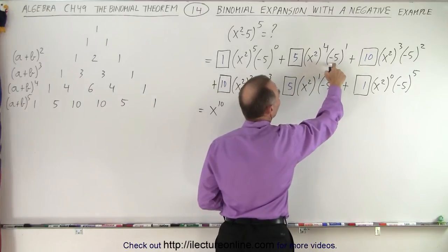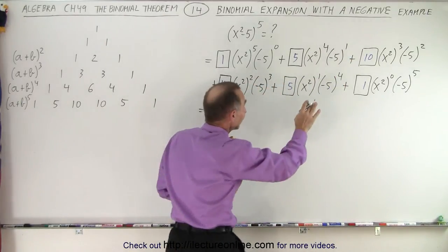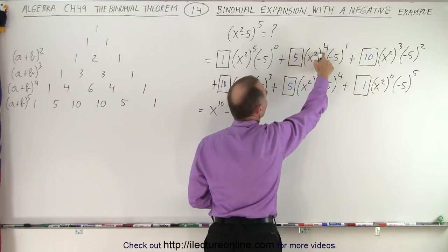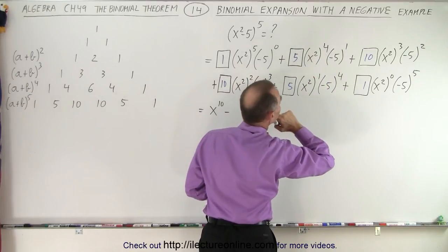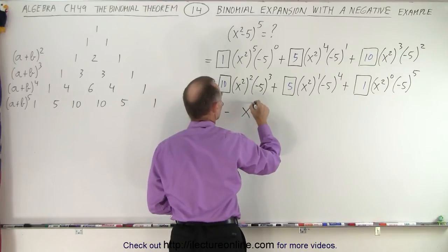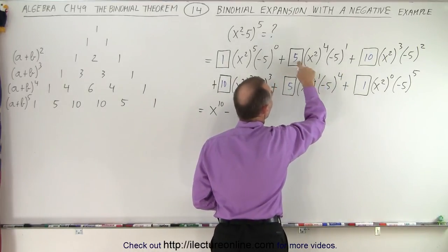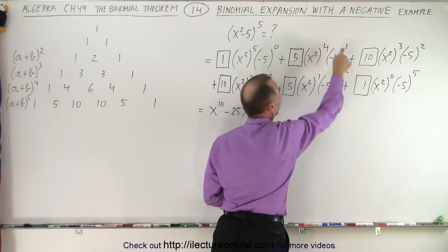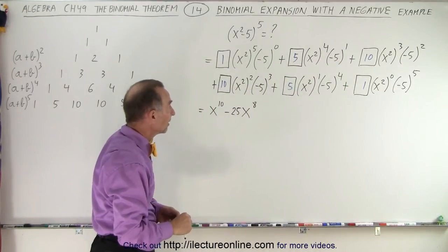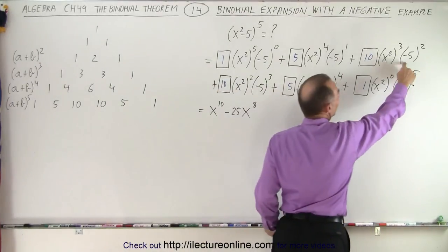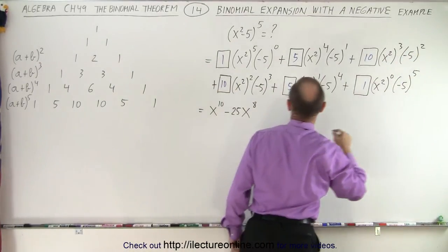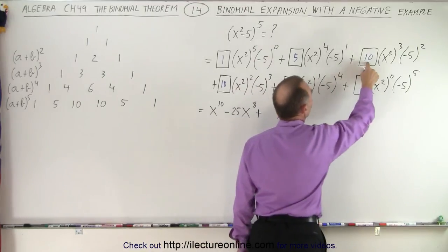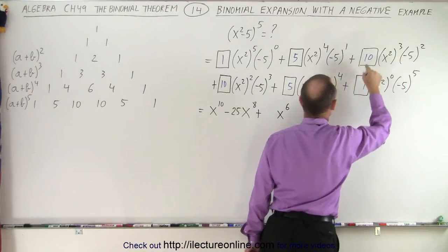Notice we have minus 5 to the first power, which means the negative sign is not negated — it comes over here. x squared to the fourth power becomes x to the 8th, and we get minus 5 times 5 which is minus 25, so we need 25 in front with a negative sign. A negative sign to an odd exponent gives us a negative. Now notice that negative 5 to the second power gets rid of the negative, giving us a positive: x squared to the third power is x to the sixth, and 10 times 5 squared is 25 times 10, which is 250.